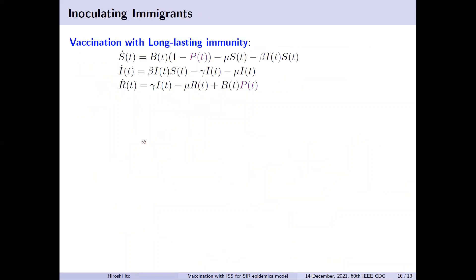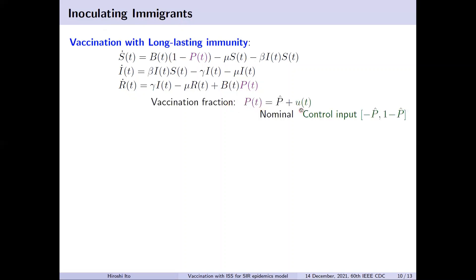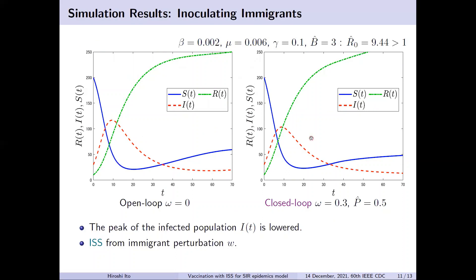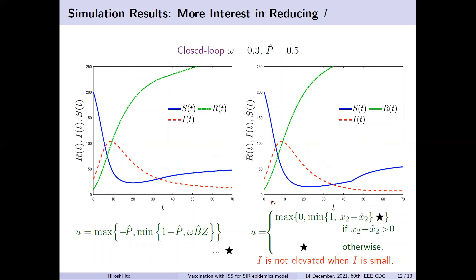It is also possible to achieve the ISS property by inoculating immigrants instead of inhabitants. In that case, P is the vaccination fraction, and you consider a control input and inflow perturbation accordingly. This is the proposed control rho for that case. By comparing the two plots, you see that vaccination of immigrants reduces the peak of the infected population, though this peak reduction is small since the number of immigrants is far smaller than that of inhabitants. You can modify this control rho further while maintaining the ISS property — for example, adding an extra function to focus on reduction of infected population in the second half of the time interval.